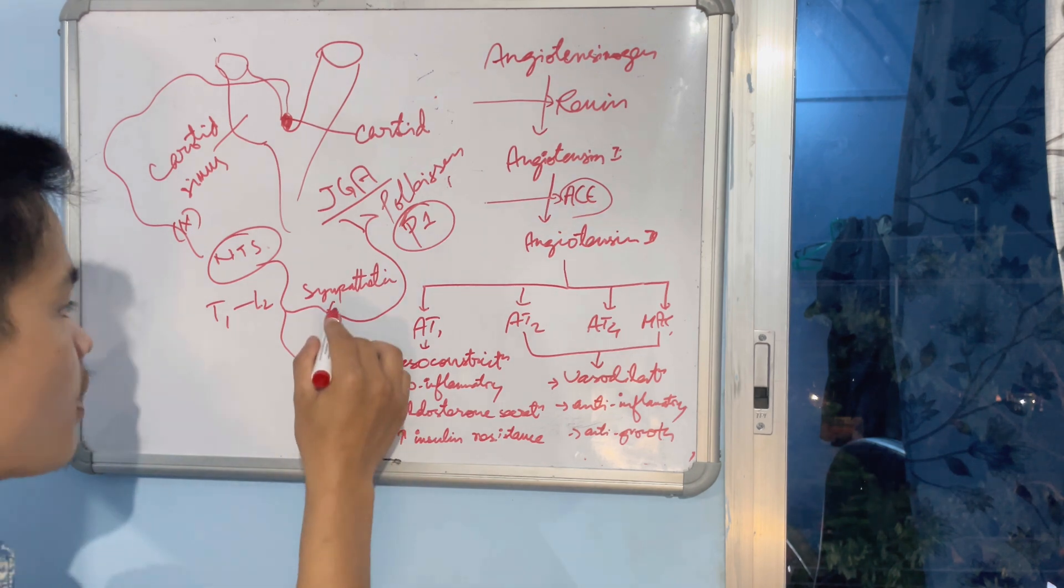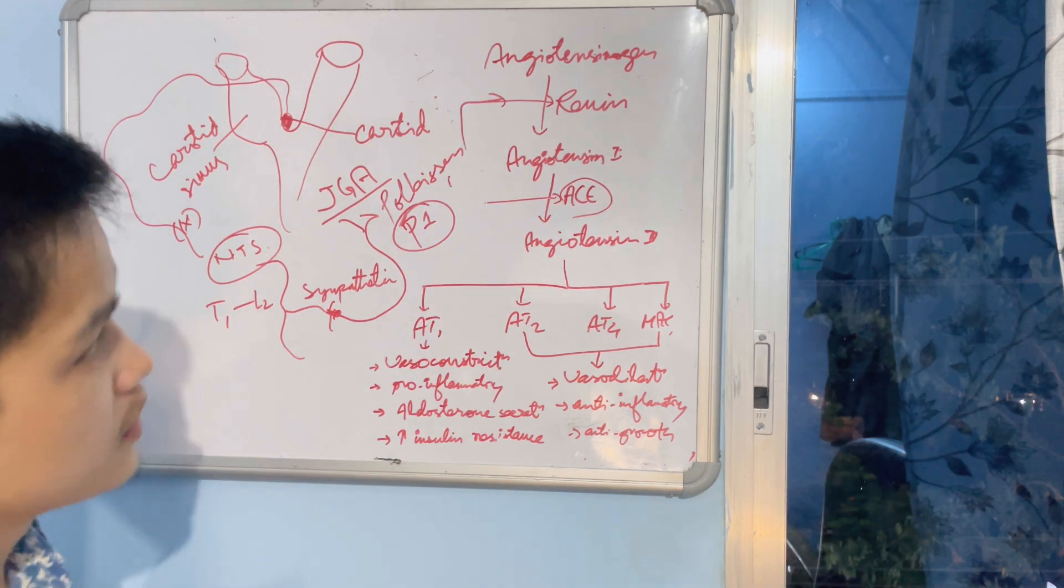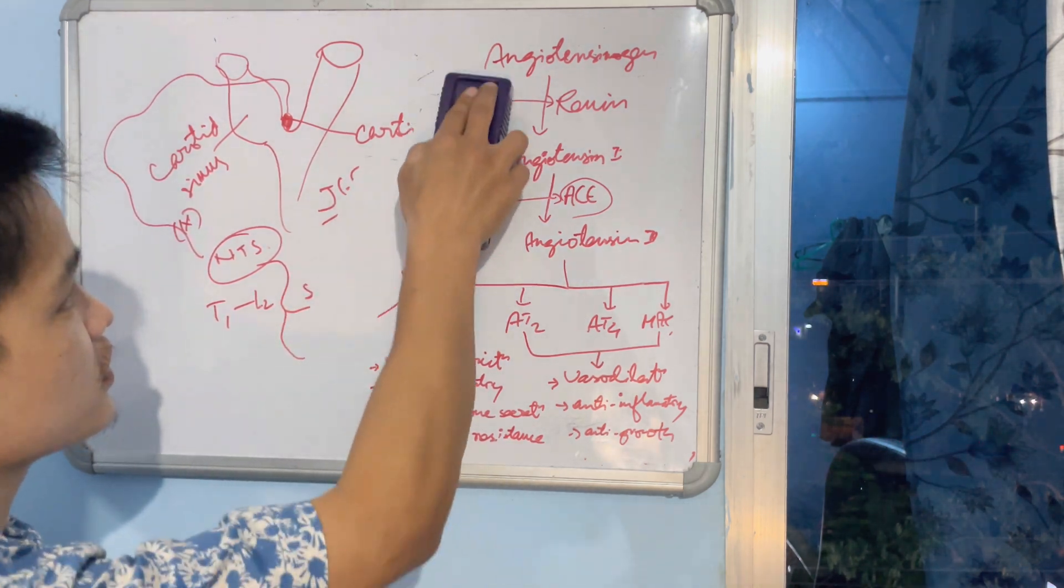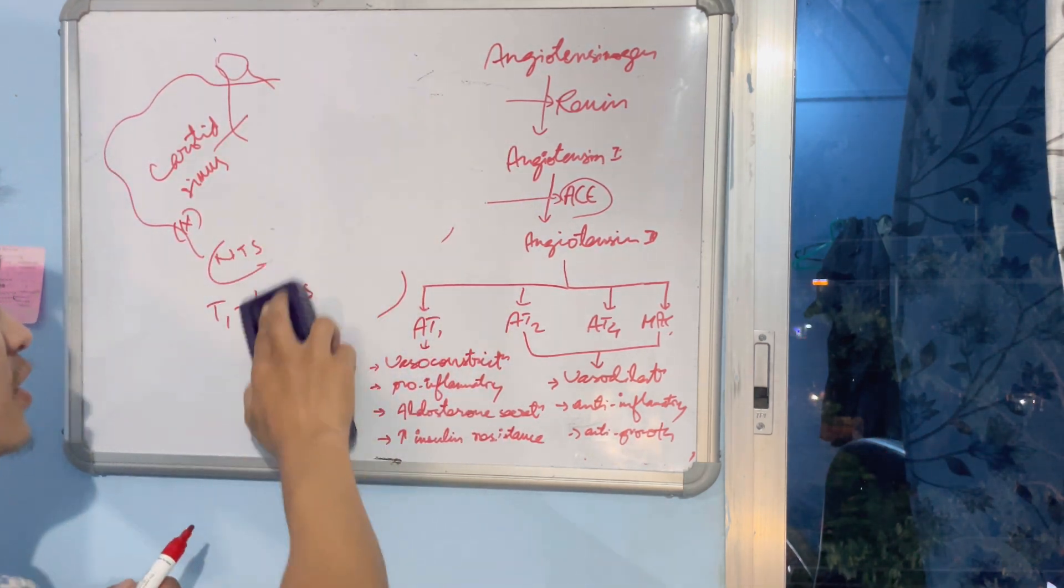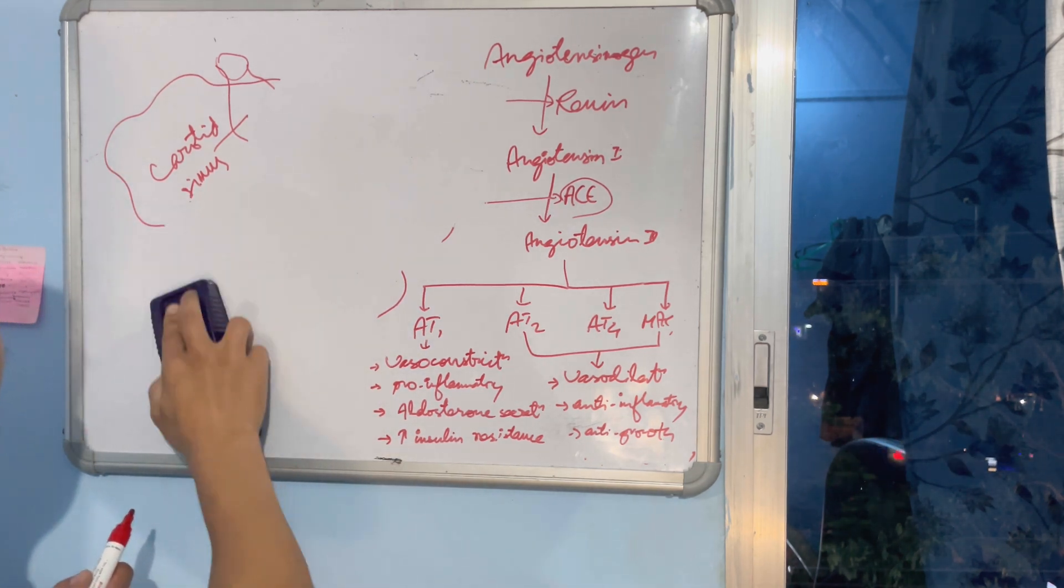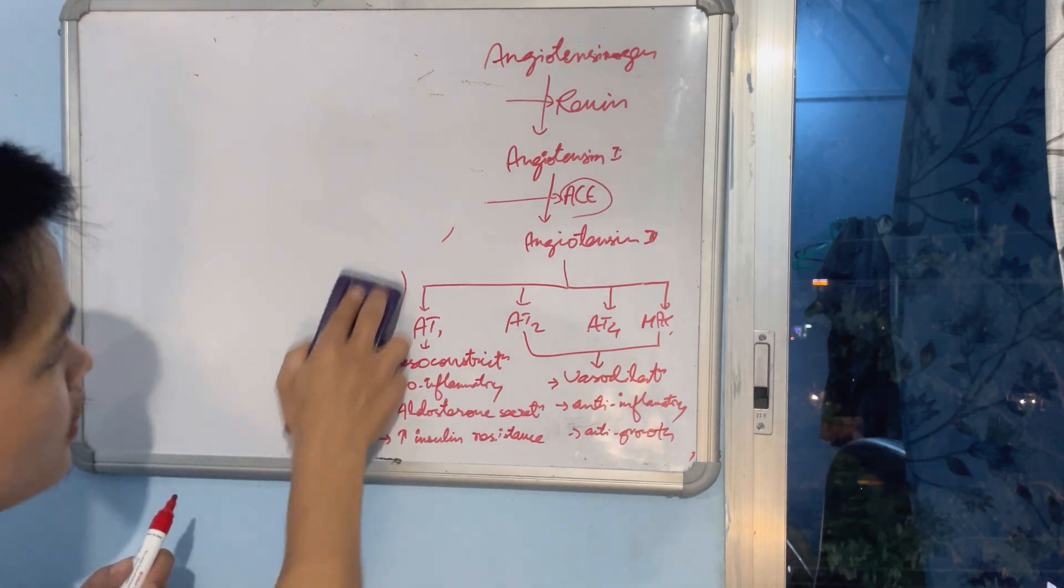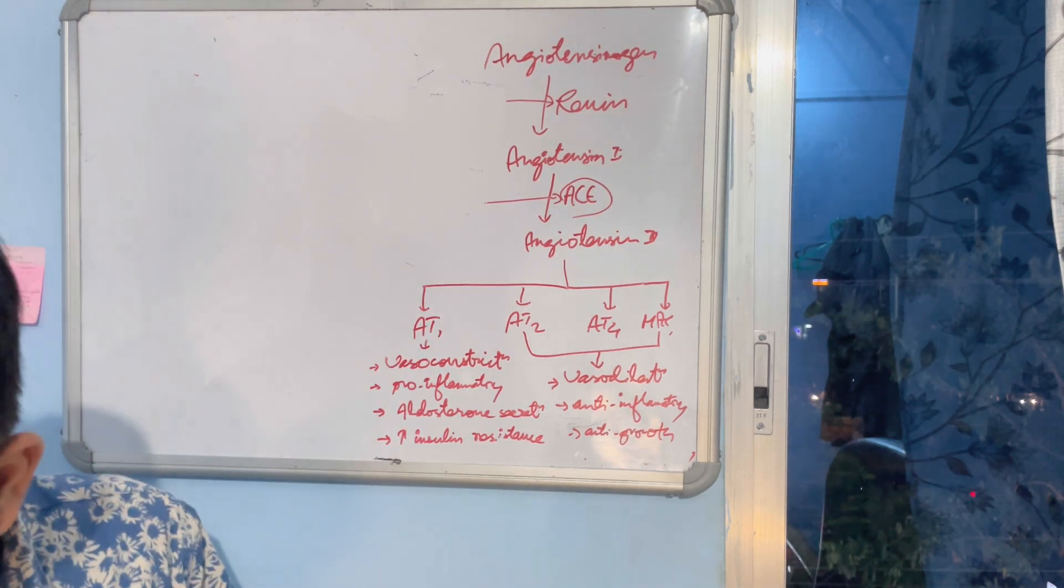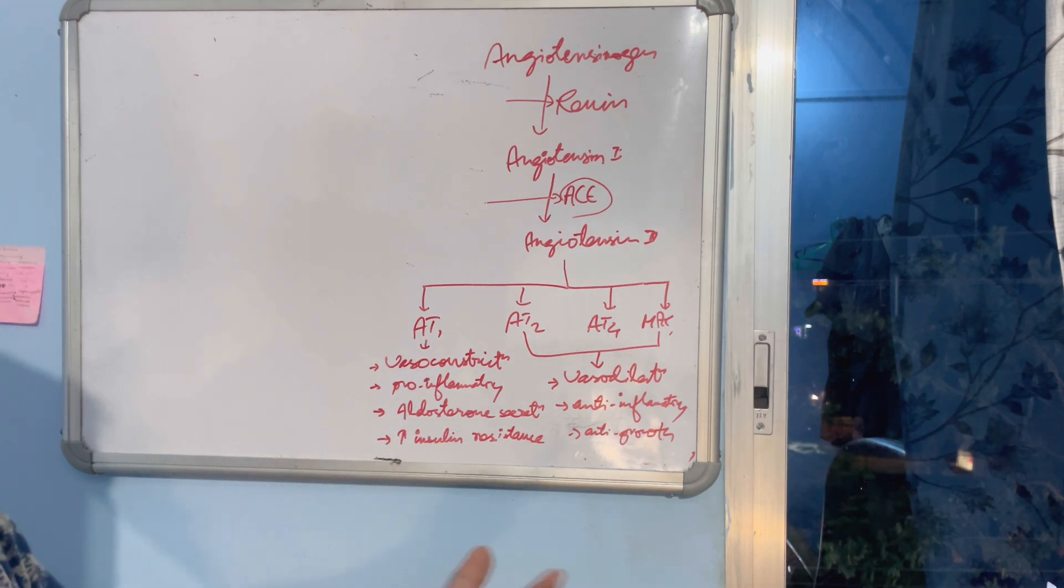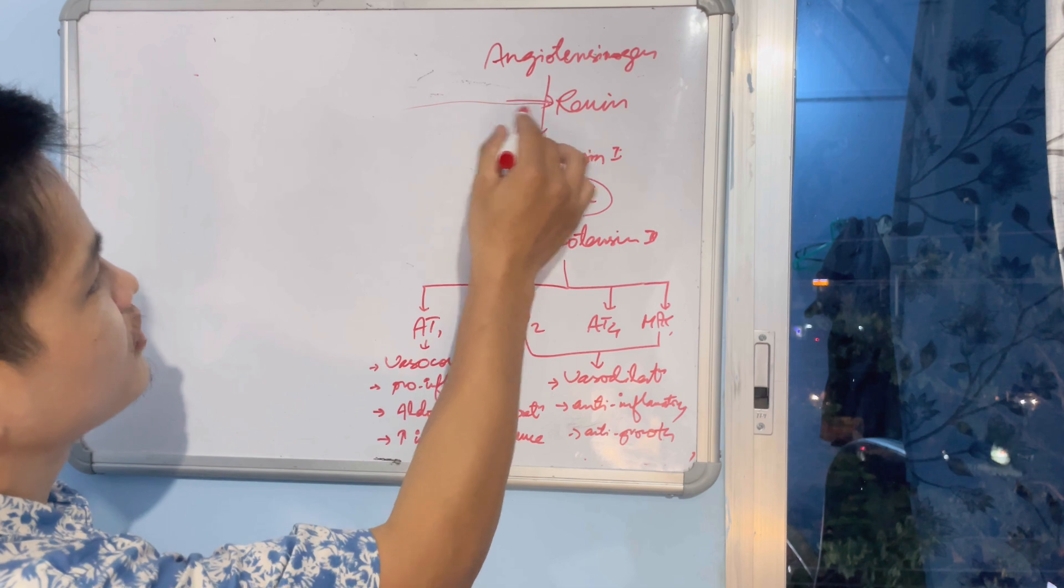Third condition is: juxtaglomerular cells themselves measure blood volume. It's like a barometer. So when they detect that the blood volume has decreased, juxtaglomerular cells will automatically release renin.